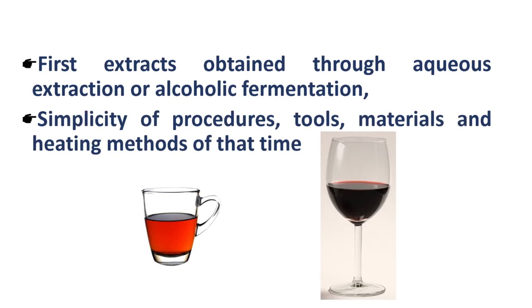For example, preparation of tea — we can say the preparation of wine — is an example of aqueous extraction and alcoholic fermentation. The procedures which were used, as well as tools, materials, and heating methods, were very simple and primitive.